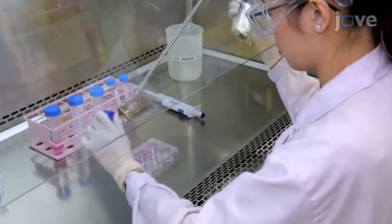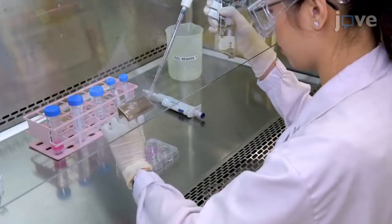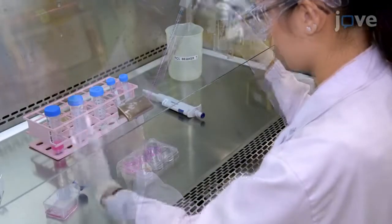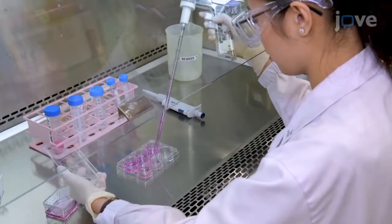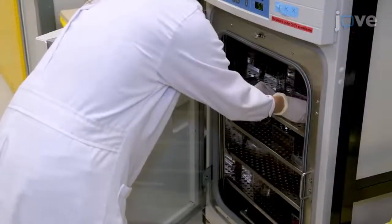Then, in a biosafety cabinet, seed MRC5 human lung fibroblasts onto 3 6-well culture plates at the concentration of 1 × 10⁵ cells per well. Incubate the cells at 37 degrees Celsius.